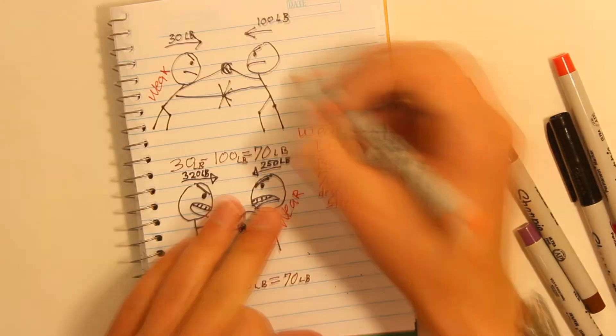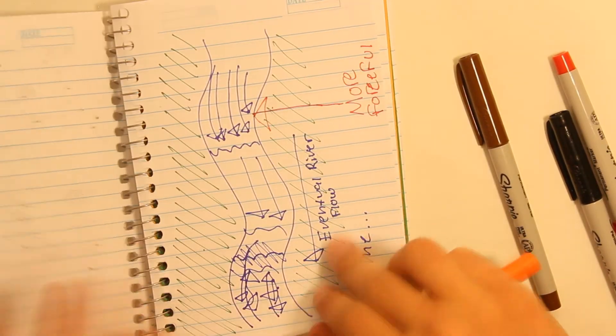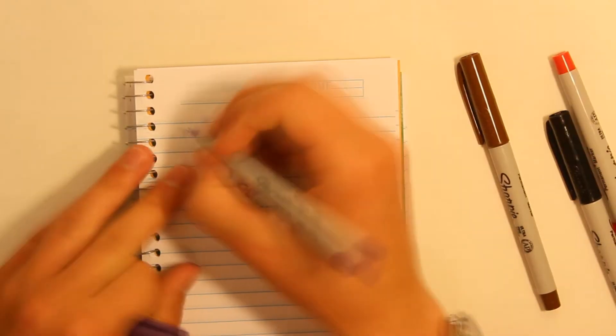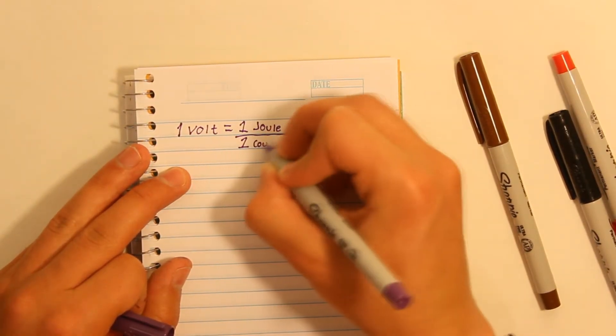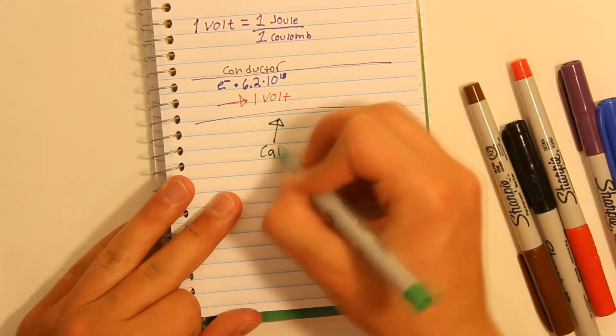Think of the water and men pushing on each other as voltage. Voltage is defined in terms of the amount of work that the electrons moving through a conductor could potentially do. One volt is one joule per coulomb. This means that a coulomb of electrons being moved through a circuit by one volt is capable of doing one joule of work.